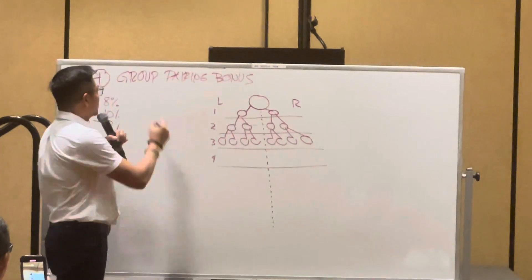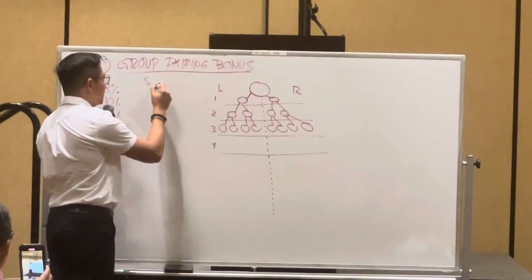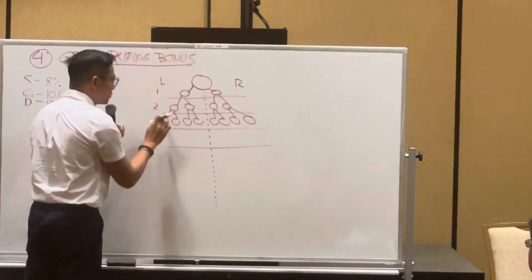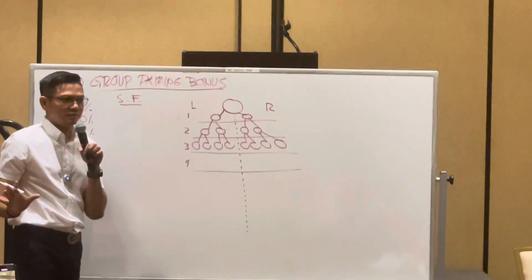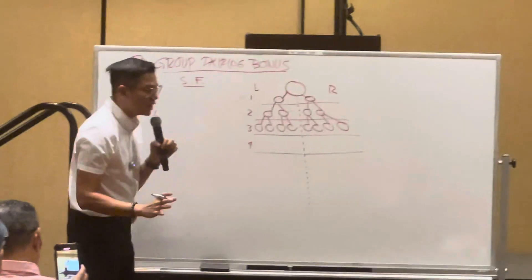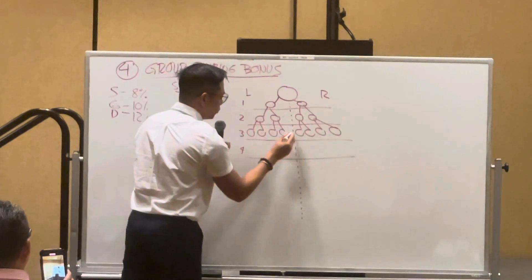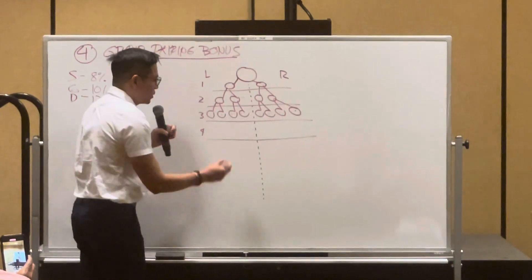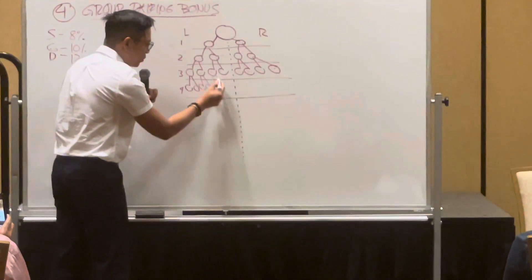Now, in the group pairing bonus, one of its safety features is that on this first, second, and third level, you don't get any group pairing bonus. It's not activated. It only activates when all of this, one, two, three, four, five, six, seven, eight, because there's no way. It's not going to trickle down.